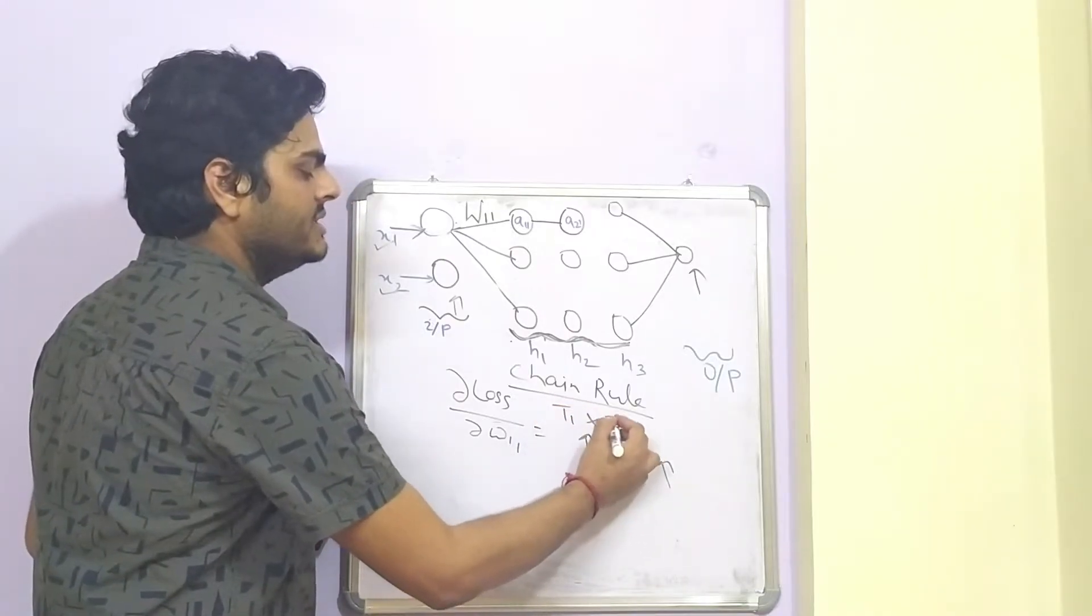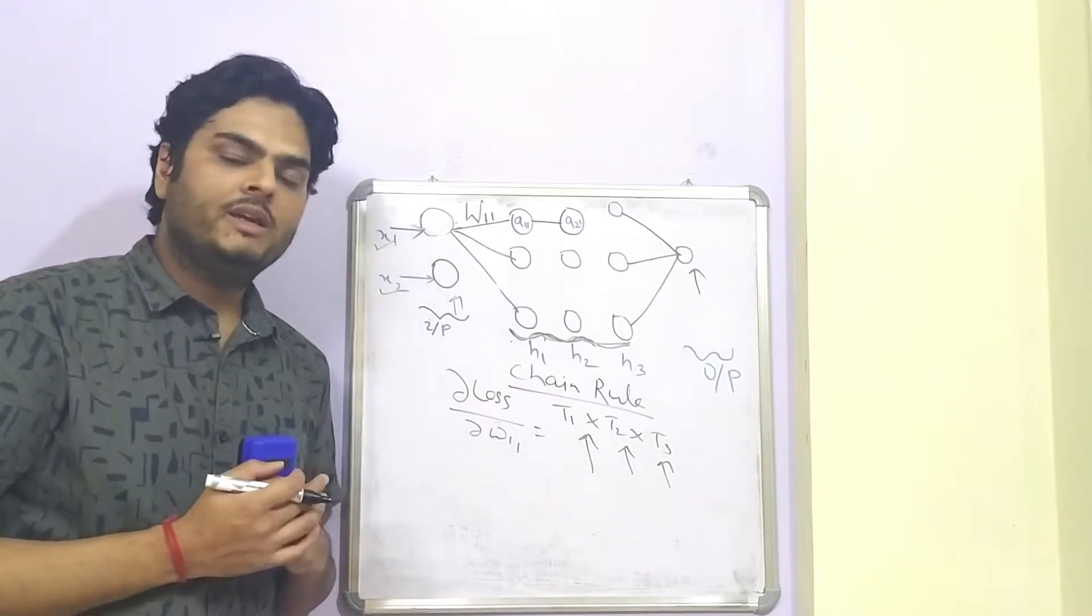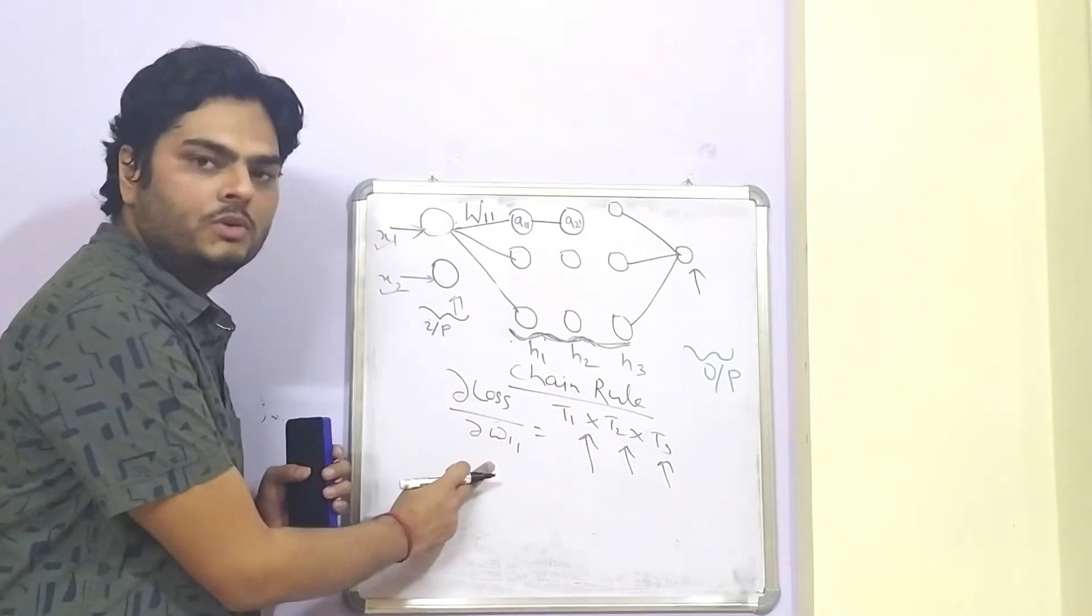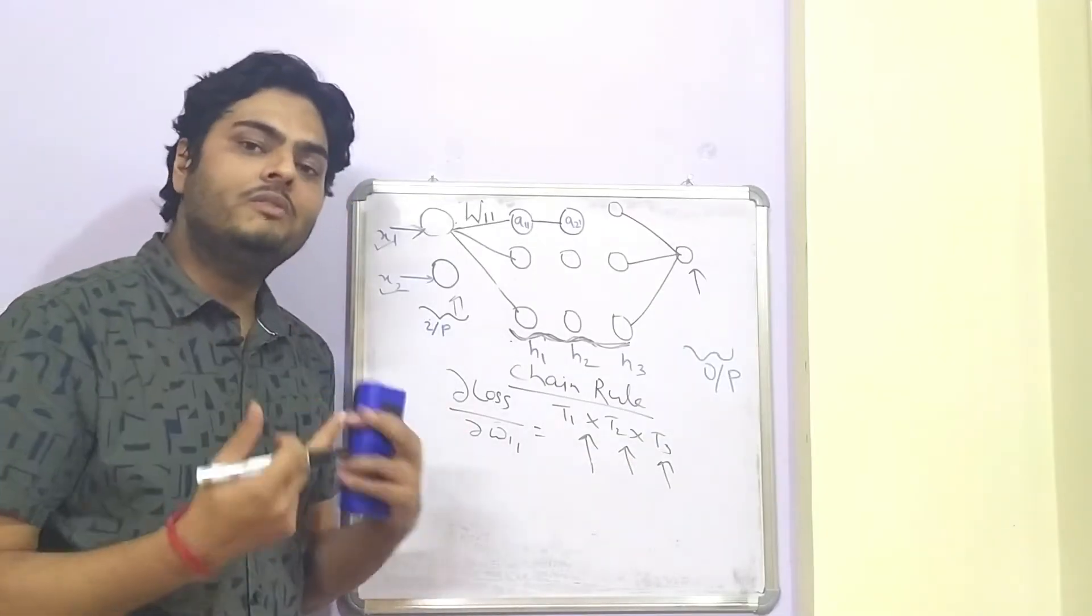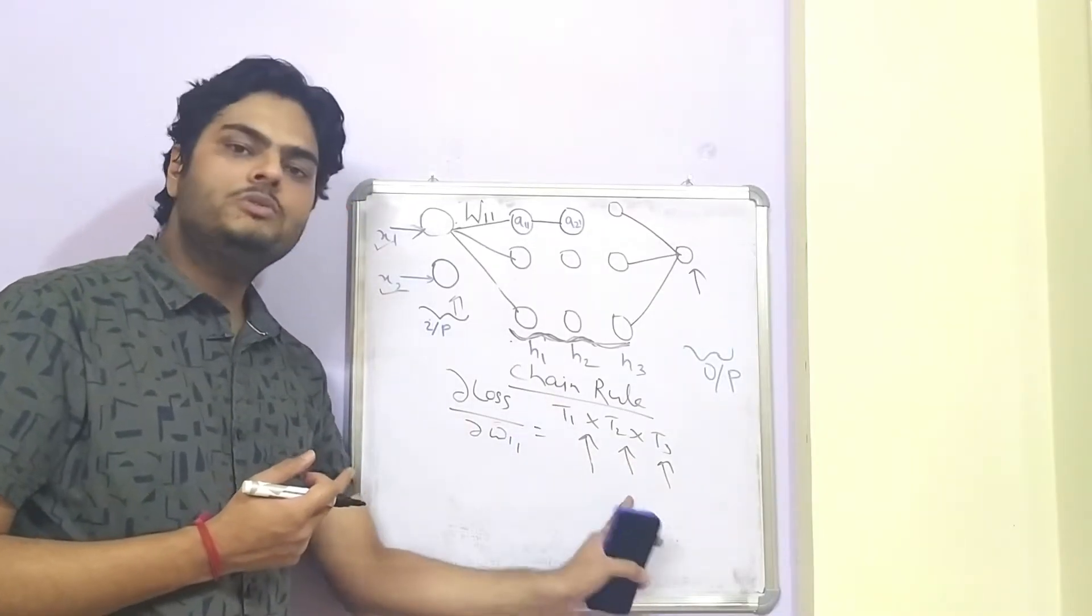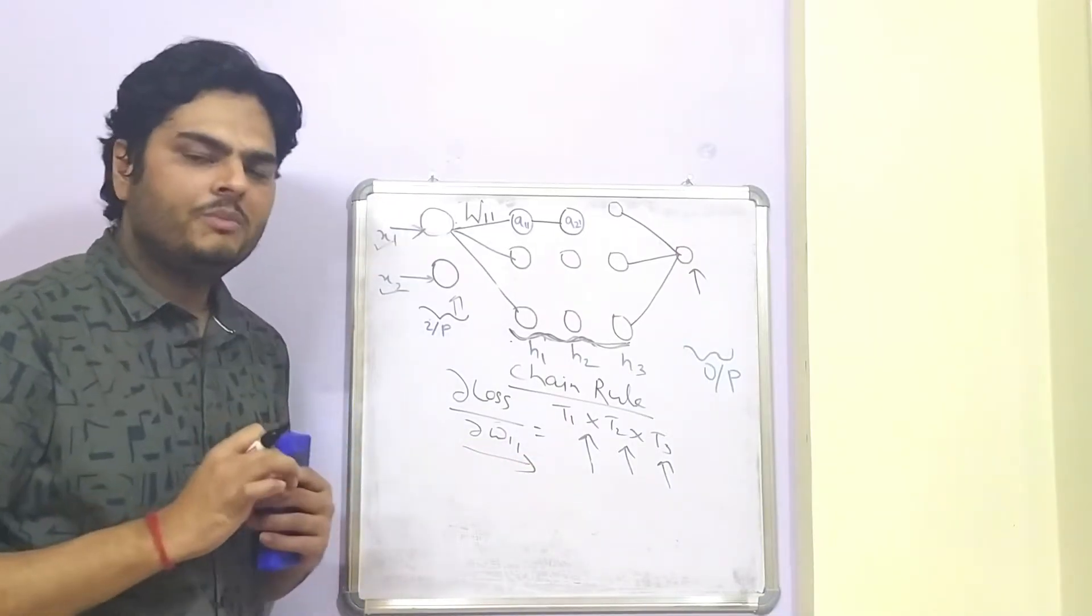Because we do not have any direct relation of loss with W11. Hence, we try to create a chain of different derivatives and try to find out the values and compute this term. Now, little bit of mathematical background here.